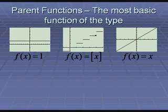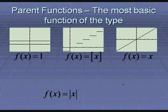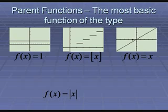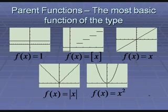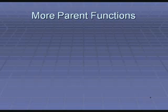Y equals x is your most basic line — it's got a 45-degree angle. Y equals absolute value of x: what does that look like? It's somewhat parabolic — it's a V. If you take y equals x and apply absolute value, everything negative becomes positive, so it flips up and you get a V-shape. X squared is a parabola. Those are some of your parent functions.